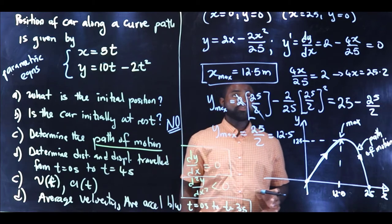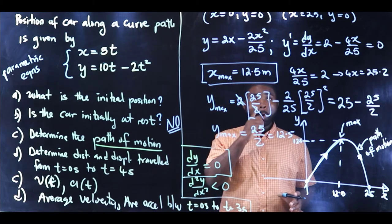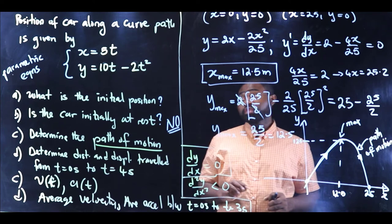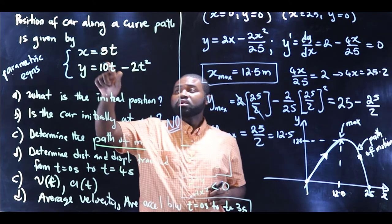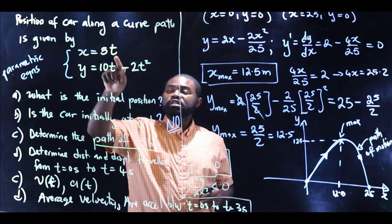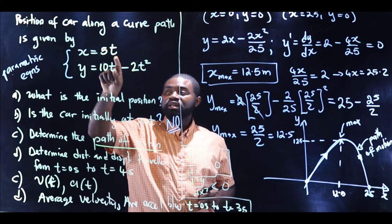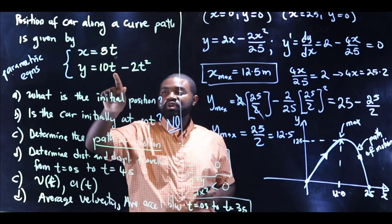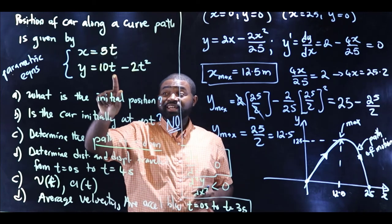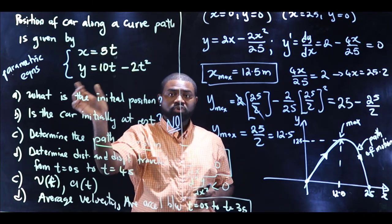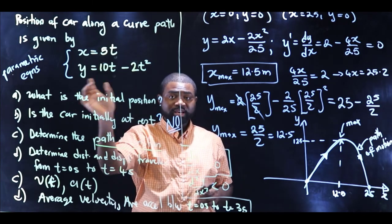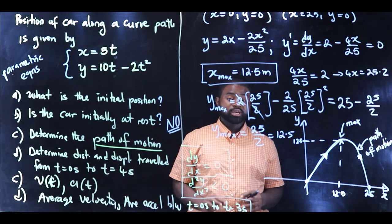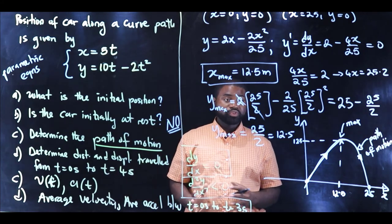Remember this: in order to determine the equation of path, isolate t in the x equation and substitute that value of t into the y equation. Then express y as a function of x. That equation is what we call the equation of path for a moving object.